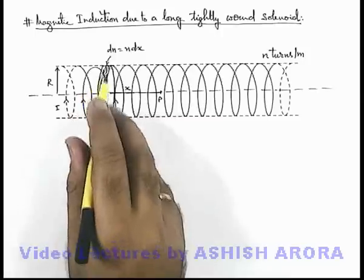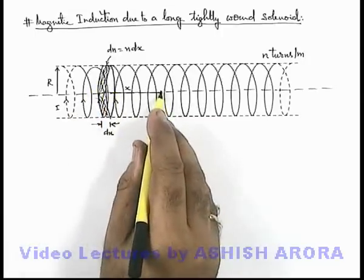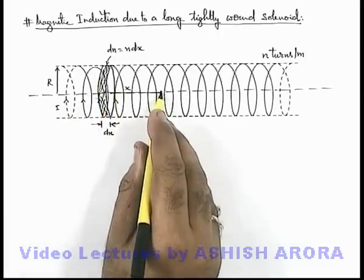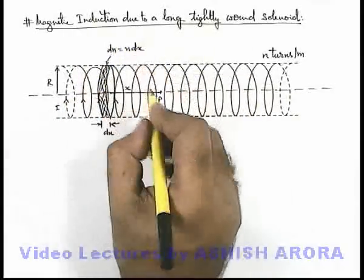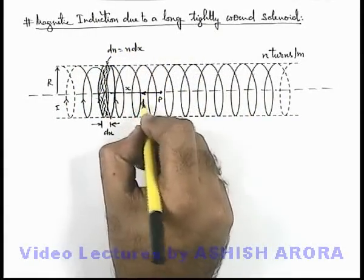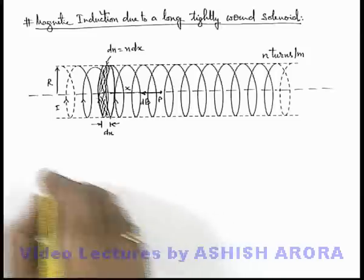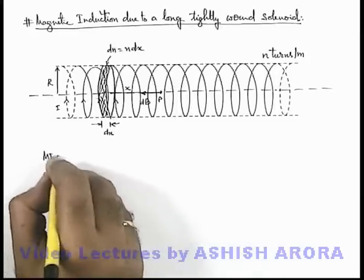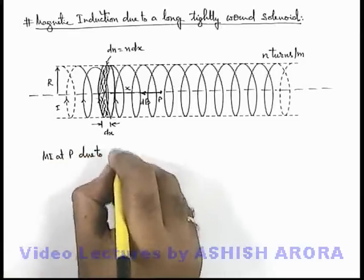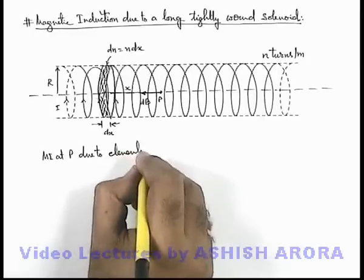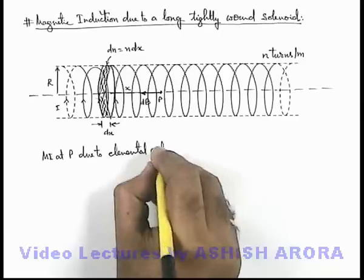And due to this ring-shaped coil, if we wish to find out the magnetic induction at point P, here we can see as the current is flowing in this manner, magnetic induction at P will be in this direction, which can be written as dB. So here, magnetic induction at P due to the elemental coil is...